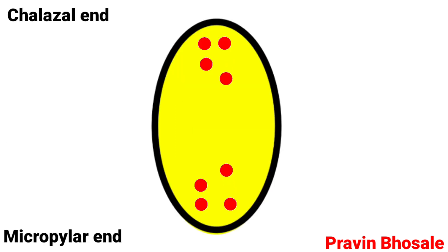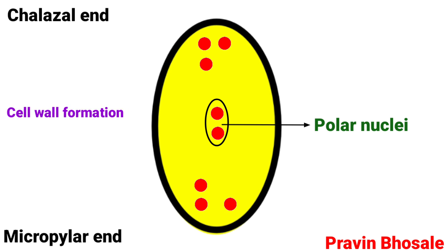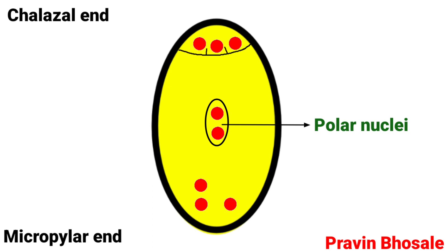One nucleus from each pole comes to the center and these are called bipolar nuclei. Cell wall formation takes place at both ends. At the chalazal end, each nucleus gets surrounded by a cell wall and forms antipodal cells.